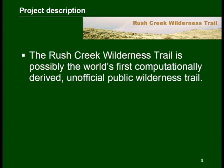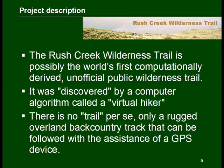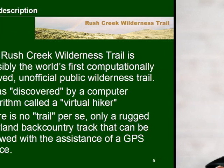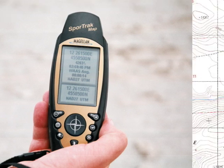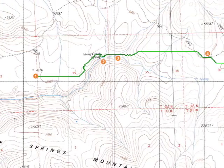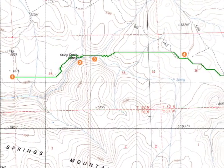The Rush Creek Wilderness Trail is possibly the world's first computationally derived unofficial public wilderness trail. The trail was first discovered by a computer algorithm called a virtual hiker that traversed the backcountry of California. The results produced a track log that can be uploaded to a GPS device and then followed by a real hiker through the actual landscape.